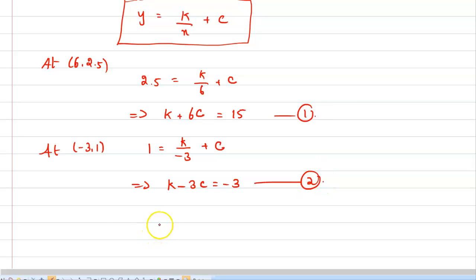Now multiply the second equation by 2 and add the two equations. So equation 1 plus 2 times equation 2 gives: k plus 6c plus 2k minus 6c equals 15 minus 6. We can cancel 6c terms, and k plus 2k equals 3k, which equals 9. So k equals 3.